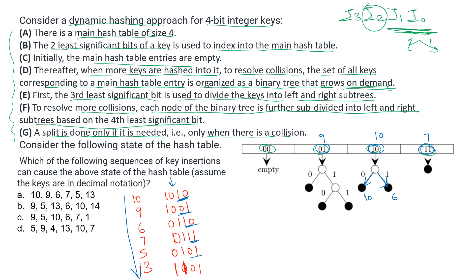For 5, the last two bits are 01, causing a collision since 9 is already at index 01. We check the i2 bit: for 9 it is 0, and for 5 it is 1. So that tree grows with the zero side representing 9 and the one side representing 5. Both are inserted successfully.